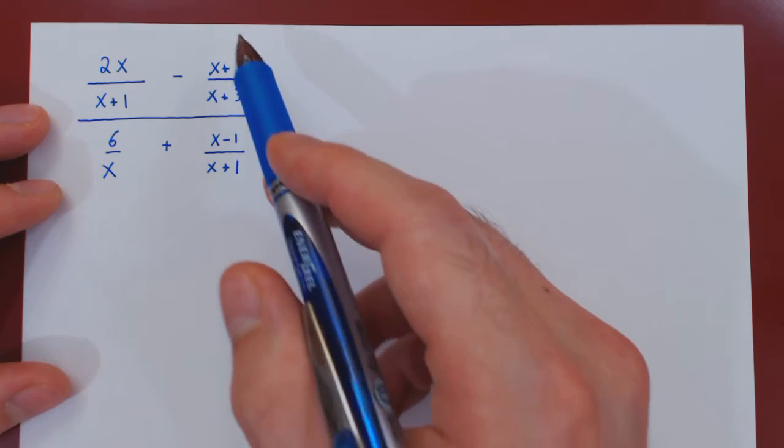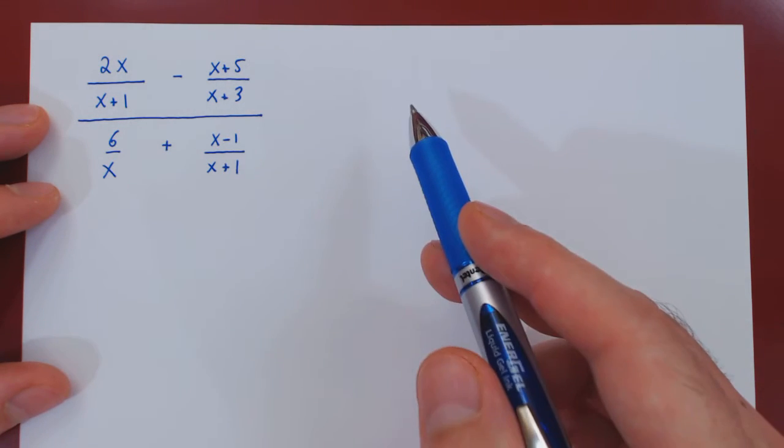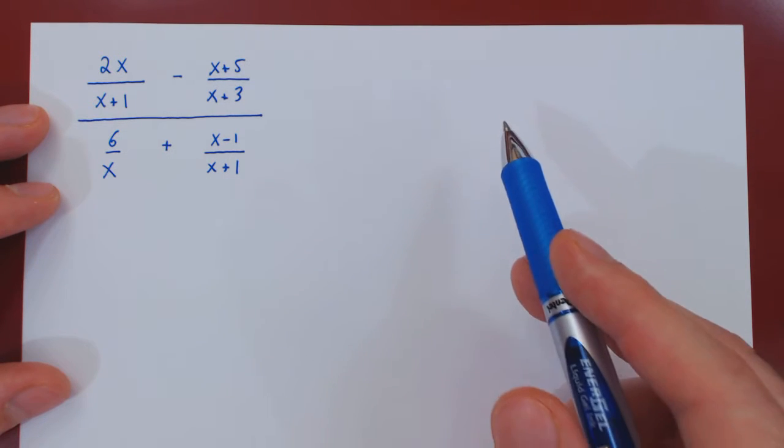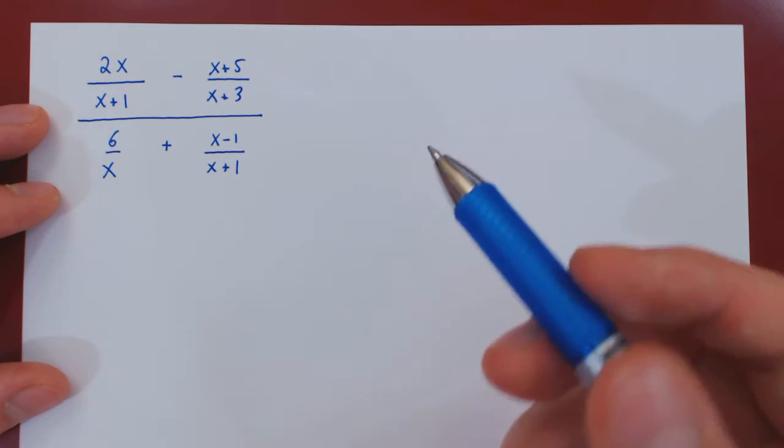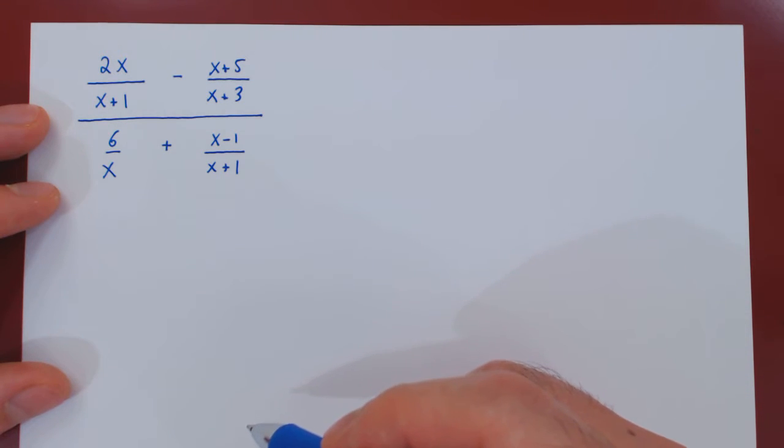Okay, so in this video, we want to simplify the following expression by rearranging it as a single fraction, so a single numerator and denominator, no fractions either on top and on the bottom, where in each case the top and bottom of our fraction is fully factored and simplified.